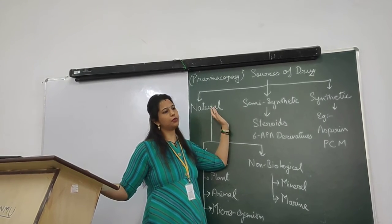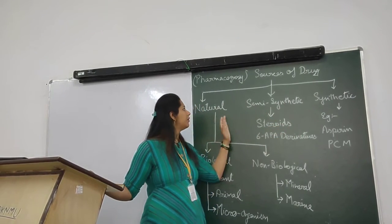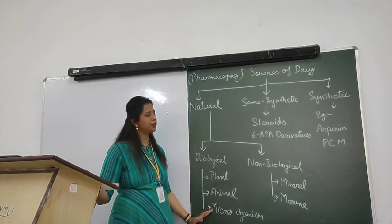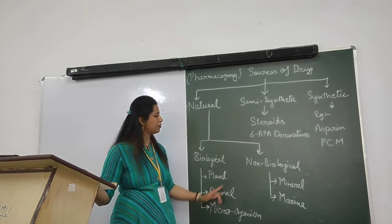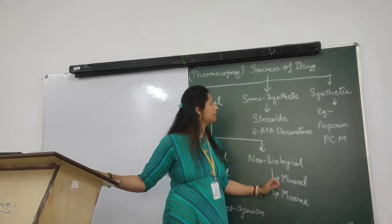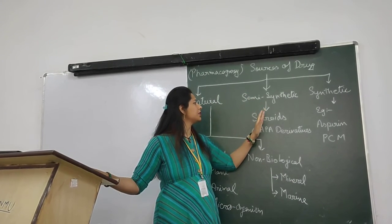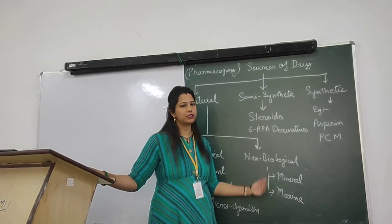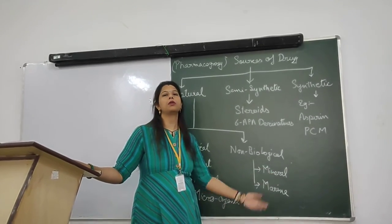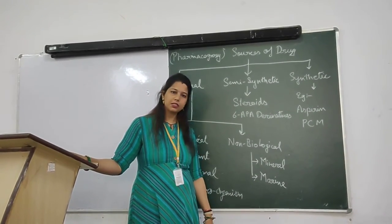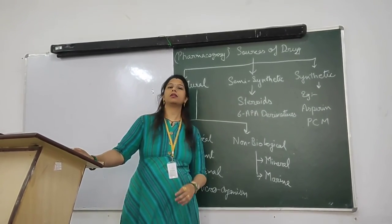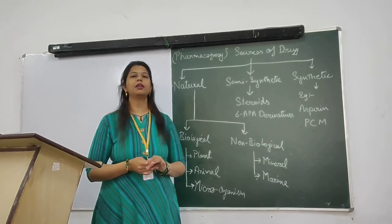In brief, sources of drugs are classified into natural, semi-synthetic, and synthetic. Natural sources are further classified into biological and non-biological. Biological sources are classified into plants, animals, and microorganisms. Non-biological sources are classified into mineral and marine sources. Semi-synthetic sources include steroids, and synthetic sources include aspirin and other allopathic medicines. That's it for today, thank you.